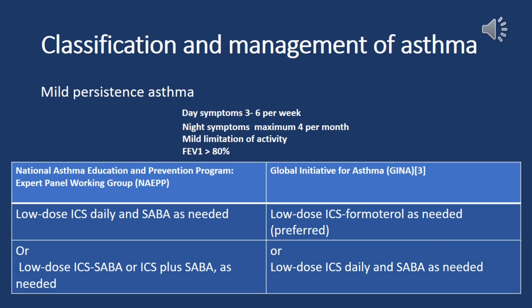Mild persistent asthma: daytime symptoms three to six per week, nighttime symptoms maximum four per month, mild limitation of activity, FEV1 greater than 80%. NAEPP recommends low-dose ICS daily and SABA as needed, or low-dose ICS plus SABA as needed. GINA recommends low-dose ICS plus formoterol as needed, or low-dose ICS daily and SABA as needed. Both GINA guidelines for intermittent and mild persistent asthma recommend low-dose ICS with formoterol to address chronic airway inflammation and reduce the risk of severe attacks in patients relying on SABA alone.